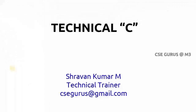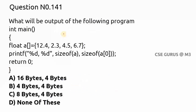Welcome to the video lectures. Coming to question number 141: what will be the output of the following program? A float array 'a' has taken values 12.4, 2.3, 4.5, and 6.7. The question is: what is the size of 'a'? Since 'a' is entirely an array, what is its size?